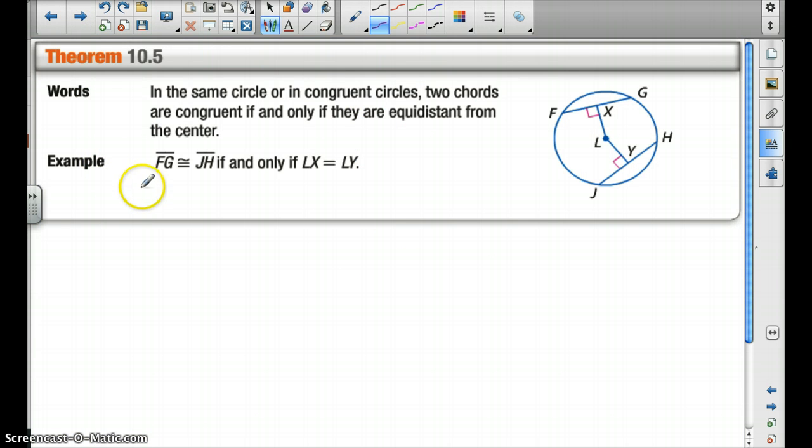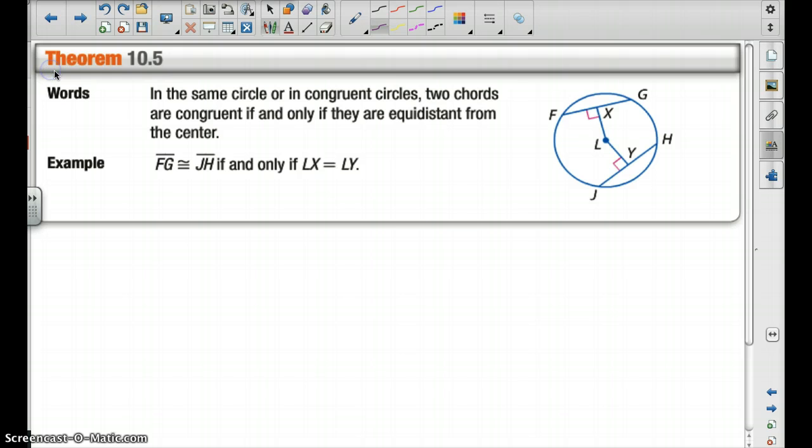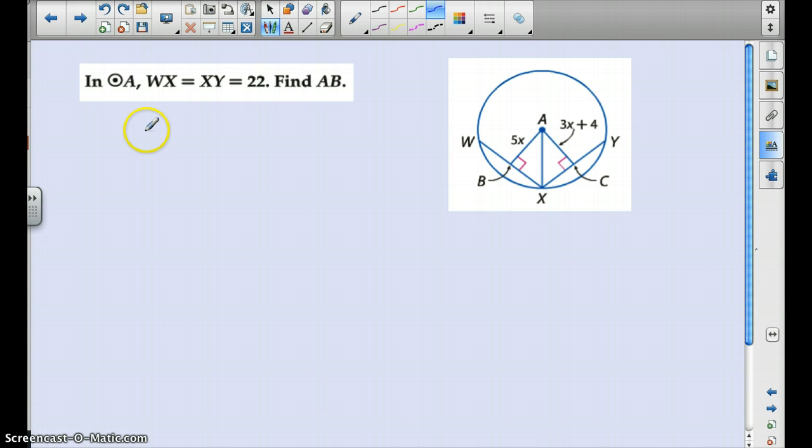So here's theorem 10.5. Go ahead and take a moment to pause the video and write this down if you haven't done so. So this theorem is saying that two chords are congruent if and only if they are equidistant from the center. So if they are the same distance away from the center, we can tell that because of these perpendicular segments that are created here. Then we can say that these are congruent. So let's do some problems using this theorem.